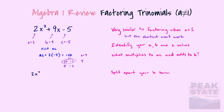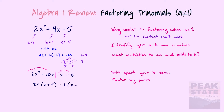Now we'll split apart that b term into the pieces we just discovered — ten and negative one — so we get 2x² plus 10x minus 1x minus 5. We're going to factor by parts here. If you need more detail on how to factor by parts, check out the other video on factor by parts. We'll pull out a common factor from the first two and the last two terms.